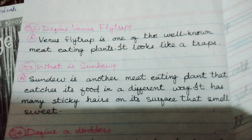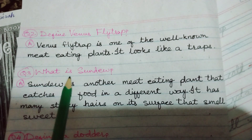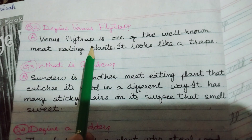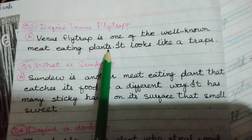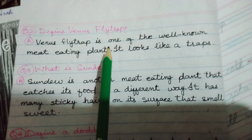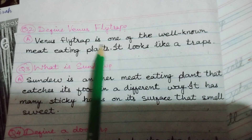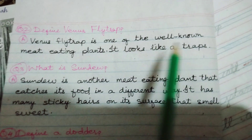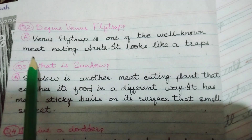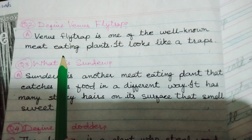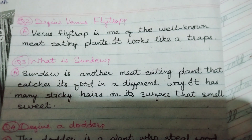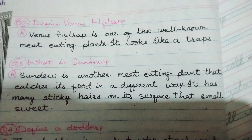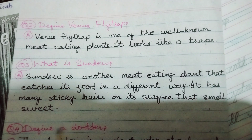Question number 2: Define Venus flytrap. Answer: Venus flytrap is one of the well-known meat-eating plants. It looks like a trap.